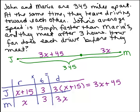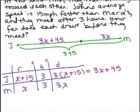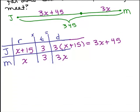So by the picture, his distance plus her distance is that total distance they were apart from each other. So that's the equation we can get by looking at that picture. So we've got John's distance, 3x plus 45, plus Maria's distance, which is 3x, adds up to a total of 345 miles.